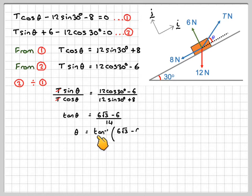In order to find the angle, we need to do tan to the minus 1 of 6 root 3 minus 6 all over 14. And I'll calculate to make sure we're in degree mode, and that will give you 17.48 degrees.